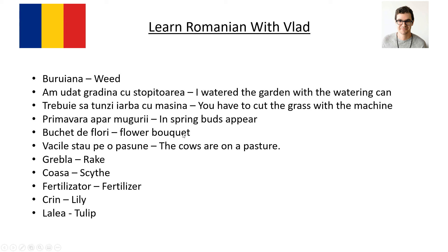Buchet de flori is a flower bouquet — you can give it to someone you love, to your mother. Vacile stau pe o pășune — the cows are on a pasture. Vacă is cow, vacile is cows. Greblă is rake — it's a stick with pins at the end so you can make small holes in the ground. Coasă is scythe — it's like the symbol of death, the grim reaper coming to take your soul.